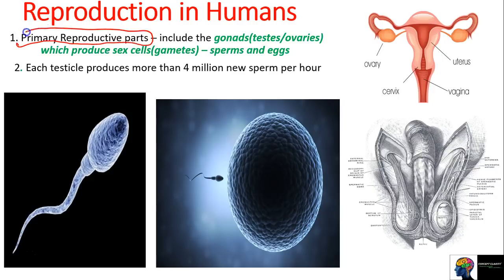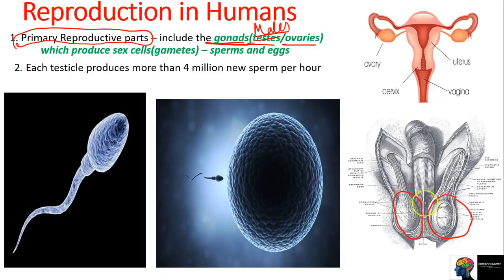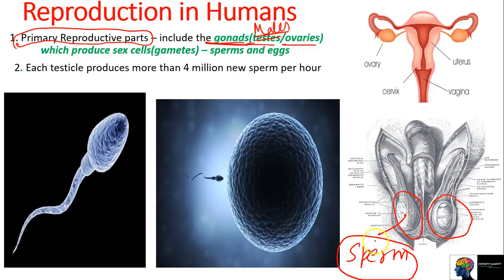The primary reproductive parts in humans are the gonads - testes and ovaries. In males, the testes are the primary reproductive part. This is the primary reproductive part in males because the testes produce sperm. So the sperm is the male sex cell, produced by the testes, making it the primary reproductive part.